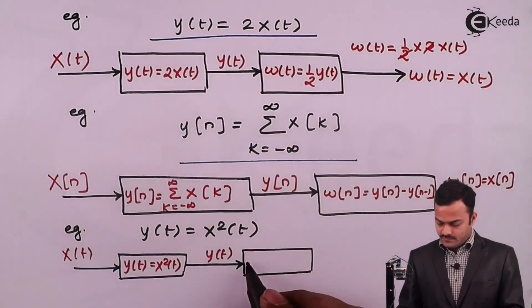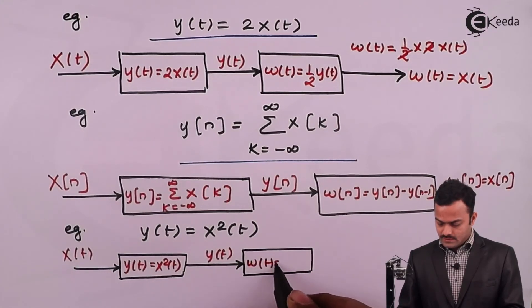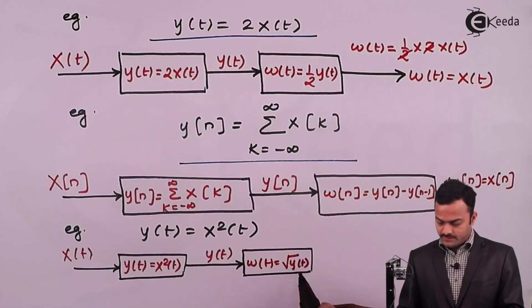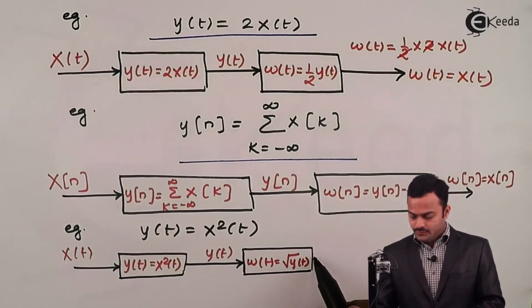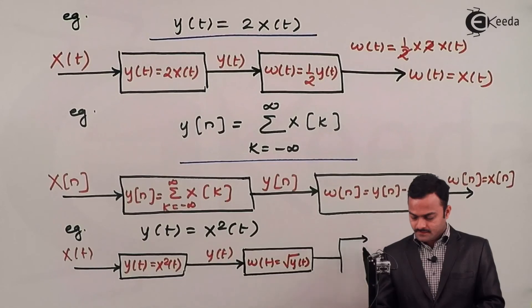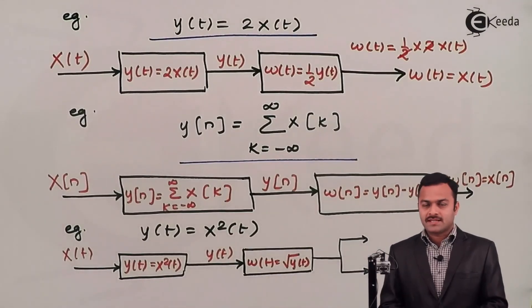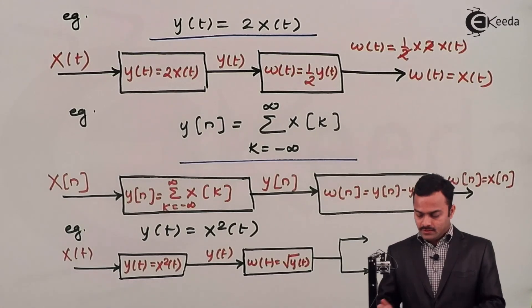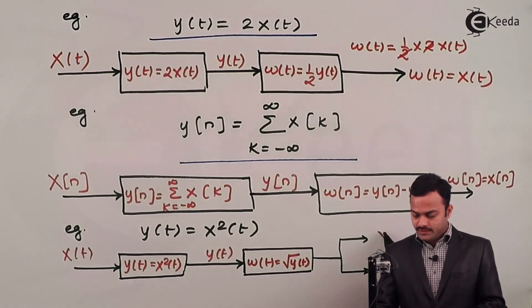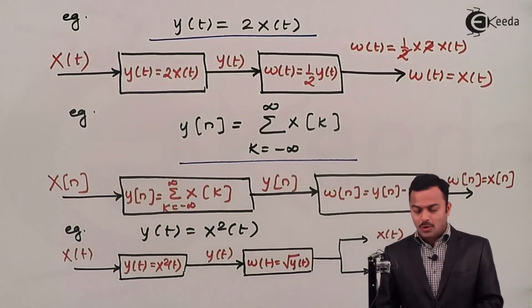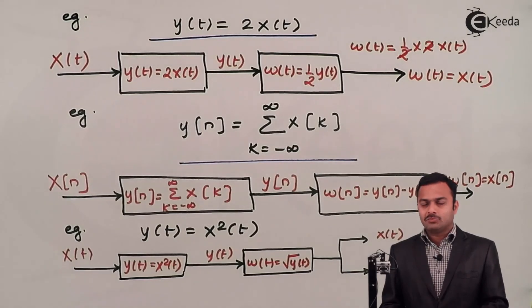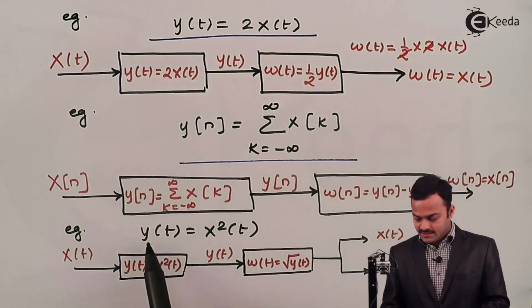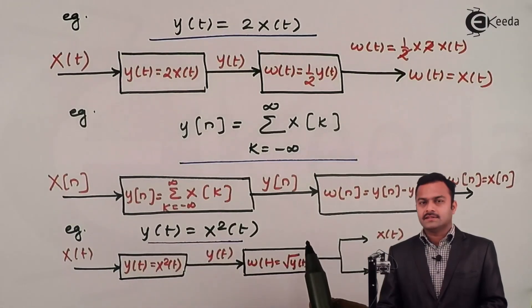So the system will have w of t as root of y of t. So the problem over here is this: root of y of t will give you two signals, because root of any number will always give you plus and minus signals. So over here we will get one signal which is x of t, and another signal is minus x of t. So the problem is that now we are getting two outputs. Hence I can say we are not getting a distinct output for a distinct input in this case. Hence this system cannot be considered as an inverse system.